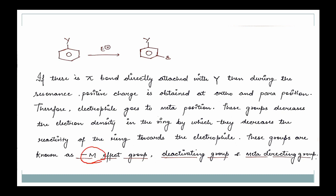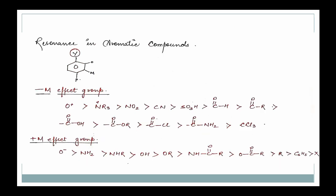Now let me tell you what the minus M effect is. Whenever any group deactivates our benzene ring toward electrophilic attack, and ultimately ortho and para positions become electron-deficient, the electrophile goes to meta. That group is known as a meta-directing group or a deactivating group. It has a minus M effect. Groups that are highly electronegative with a positive charge have the strongest minus M effect.